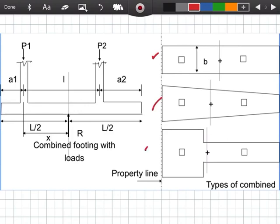The result is a uniform pressure below the entire area of footing. That is our target - the uniform pressure. Trapezoidal footing is provided when one column load is much more than the other. Instead of rectangular, at the smaller column, it doesn't need wide footing.